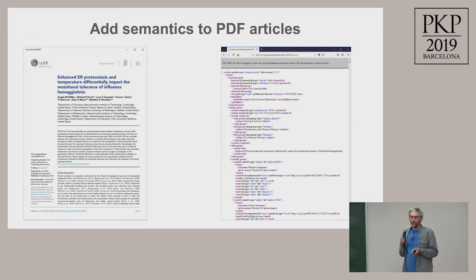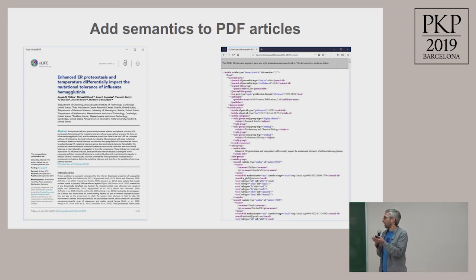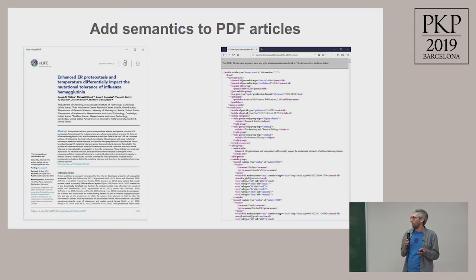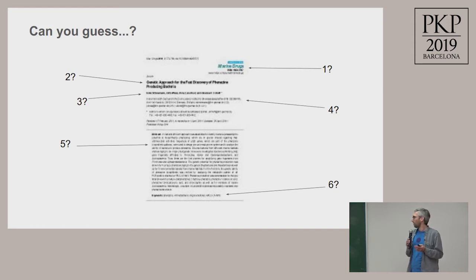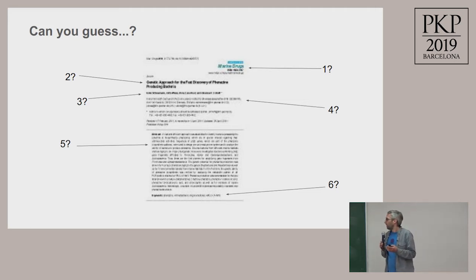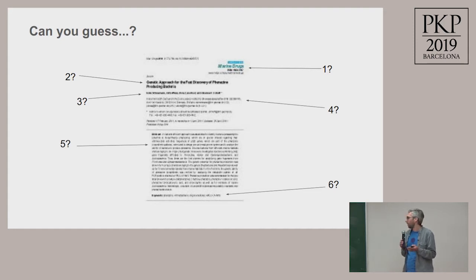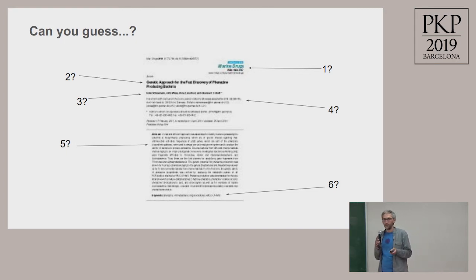The general idea of ScienceBeam was to convert a PDF document — in this case a typeset manuscript, but it could be the author-submitted manuscript — converted to semantic XML. The first thing we looked at was computer vision. The general idea is that if you look at a picture, you probably can't read the text, but you might be able to work out where the title is, where the abstract is, and other elements. If humans can do that, then a machine should be able to learn that as well.